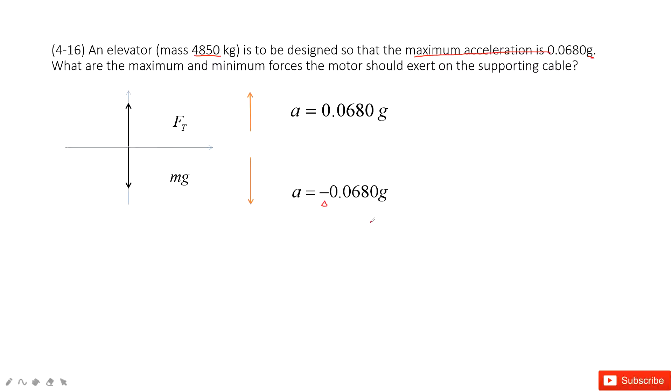Next, we can apply Newton's second law. For Newton's second law, the net force equals the mass times acceleration. So tension minus gravity equals mass times acceleration. The acceleration can be positive or can be negative.